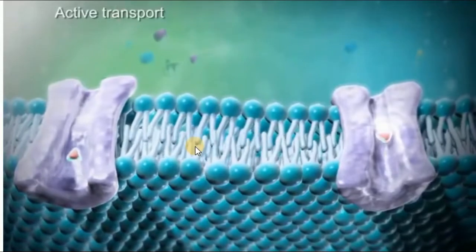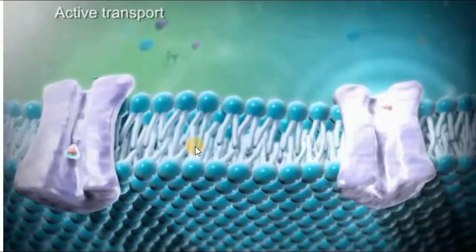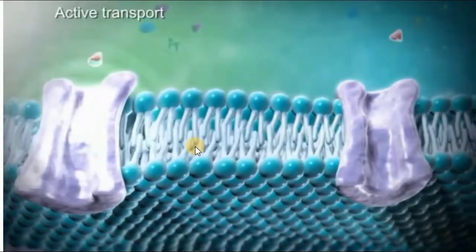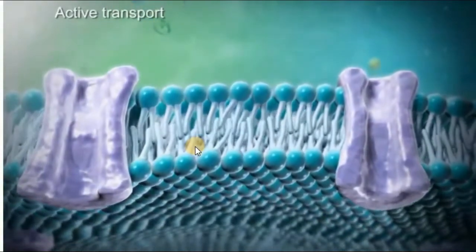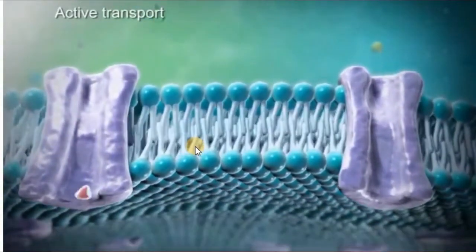When the molecules of a substance need to move from an area of low concentration to one of high concentration, they use specialized proteins in the cell membrane.